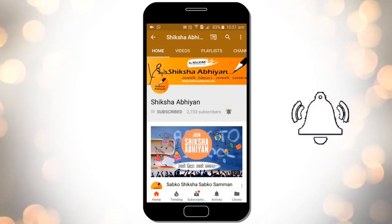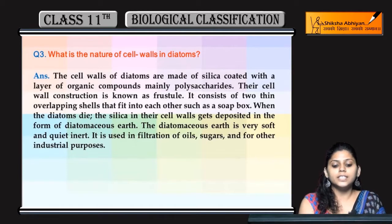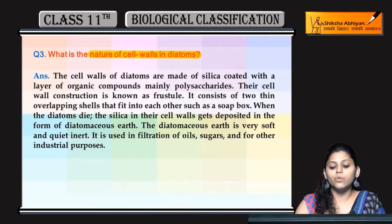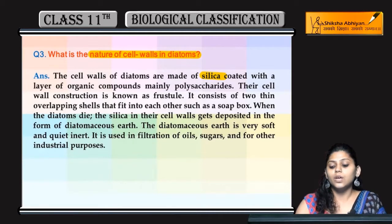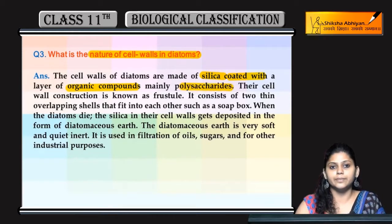Next question is: what is the nature of cell walls in diatoms? Diatoms ki cell wall kaisi hoti hai? Sabse important hai diatoms ki cell wall mein silika present hota hai, jo coated hota hai with organic compounds, jo mainly polysaccharides hote hain.